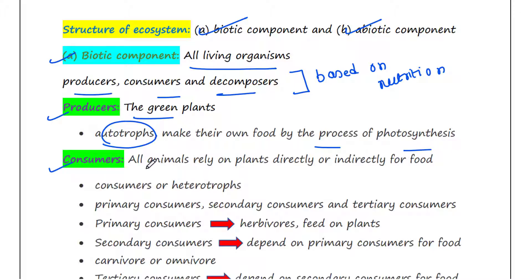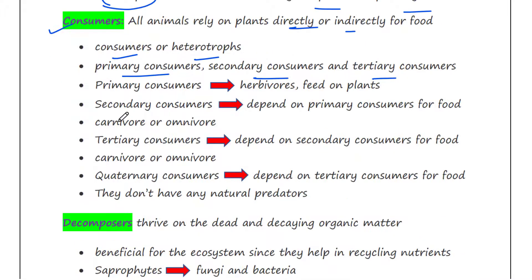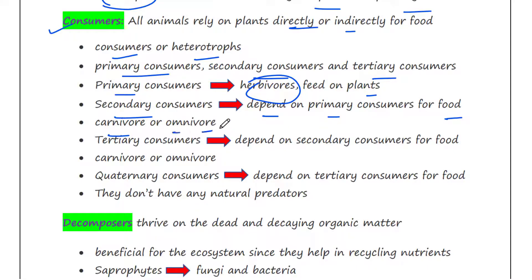All animals rely on plants directly or indirectly for their food; they are called consumers or heterotrophs. Consumers are of three types: primary consumers, secondary consumers, and tertiary consumers. Primary consumers are always herbivores because they feed on plants. Secondary consumers depend on primary consumers for food and can either be carnivores or omnivores.